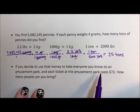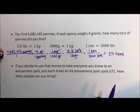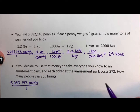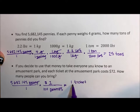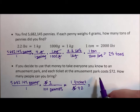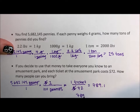If you decide to use that money to take everyone you know to an amusement park, and each ticket costs $72, how many people can you bring? We have 5,682,145 pennies. This time we're not going to weight — we want money. $1 is worth 100 pennies, so pennies cancel. We also know one ticket is worth $72, and the labels cancel as we go. So we take our pennies, divide by 100, divide by 72, and the answer comes out to 789.1 — meaning we can bring 789 friends with us. Which sounds like quite a party.